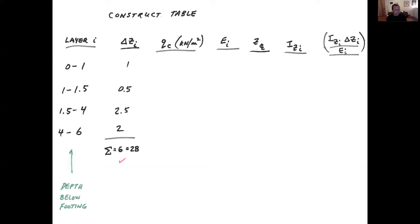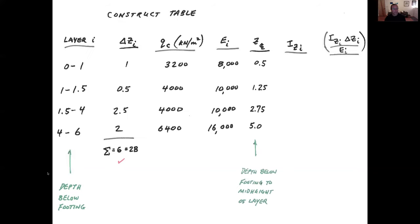Q sub c was given in the problem you saw. And e sub i, the modulus we can use, young normally consolidated silica sand, will be two and a half times that column. So we end up with 3,200, 4,000 for the two intermediate layers, 6,400. Multiply each of those by two and a half to arrive at these numbers. That will also be in KPA. The units have not changed. And z of the center line, what we have here is the depth below the footing to the mid height of each of these layers. So zero to one meter, it would be at a half meter, is the mid height. One to one and a half, 1.25. 1.5 to 4, 2.75. 4 to 6, we have 5 as the center line.